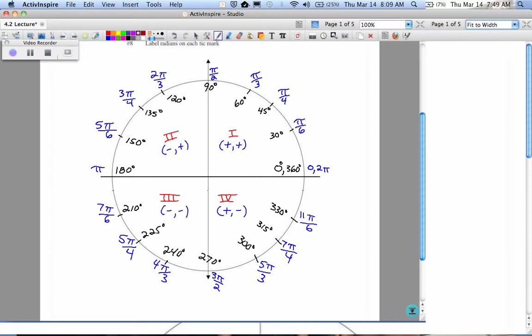Please understand that when you're working with the unit circle, the radius of this circle is 1. So if I start at the origin and I go 1 to the right, what is the ordered pair out here? 1, 0. If I start at the origin and I go up 1, what is my ordered pair? 0, 1. If I go from the origin to the left 1, what is my ordered pair? Negative 1, 0. And when I go from the origin to the bottom, 0, negative 1.